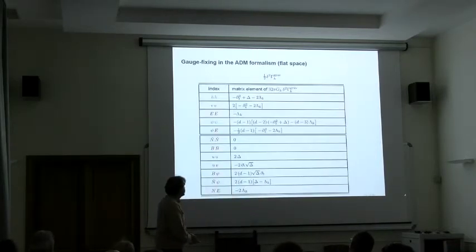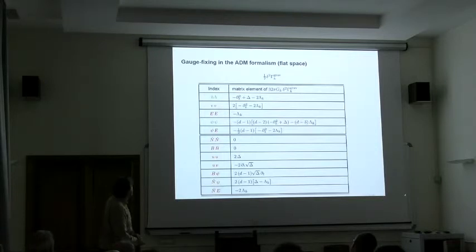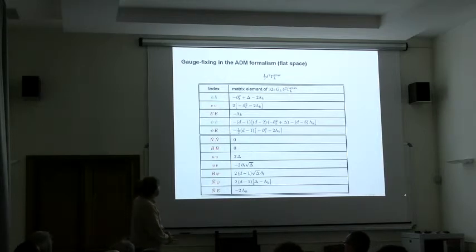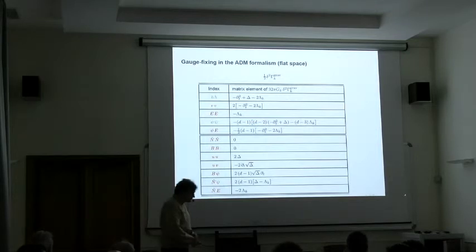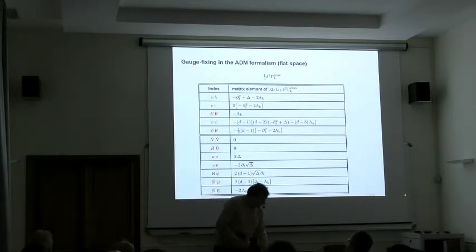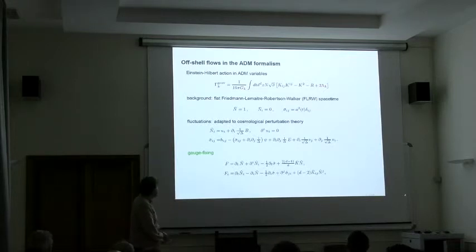Then, we are instructed to construct the propagators on this background. And then we see, oh, something is wrong. These are not the standard propagators that you know from field theory in flat space. Here you are missing spatial momenta. Here is a strange combination of space and time derivatives. Something is very strange here. Now, wait a minute. We forgot to add some gauge fixing terms.